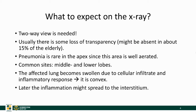What should we expect to see on the chest x-ray? First and foremost, you need two views, because some pneumonia will hide behind the heart or below the diaphragm and you won't see it on the PA x-ray. Usually we see some loss of transparency, an opacity, though this might be absent in about 15% of the elderly. Pneumonia in the apex is rare because this area is well aerated. The most common sites are the middle lobe and lower lobes on both sides. The affected lung usually doesn't change in volume, though in some cases it might increase due to the affected segment getting swollen from the infiltrate and inflammatory response, becoming convex. Later, the inflammation might spread to the interstitium.